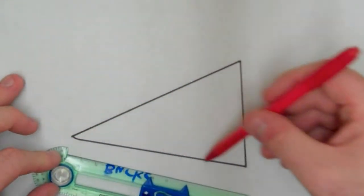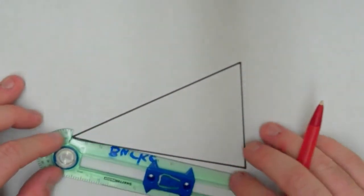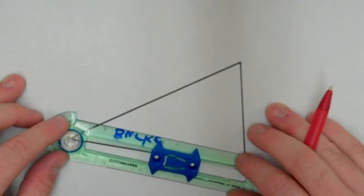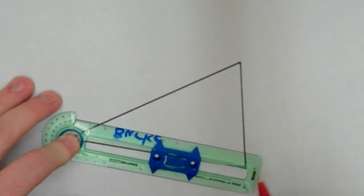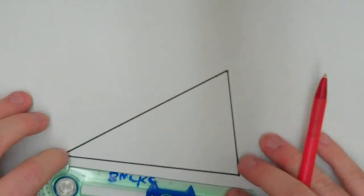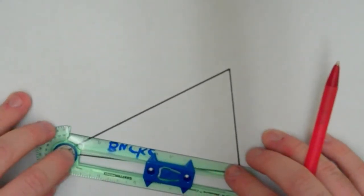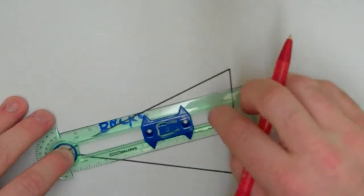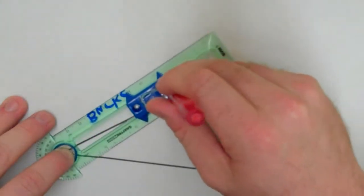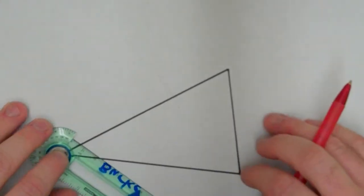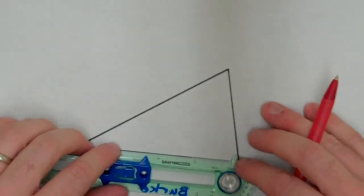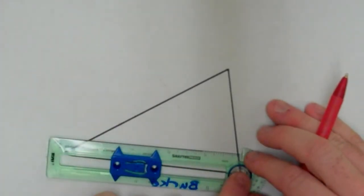So I'm going to do the perpendicular bisector of this segment and this one, and that should find my circumcenter. As you recall, a perpendicular bisector is found by putting the point of your compass on the endpoint of the segment, and then opening up the compass more than halfway, making a mark above and a mark below.